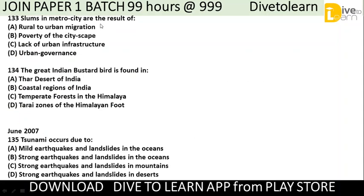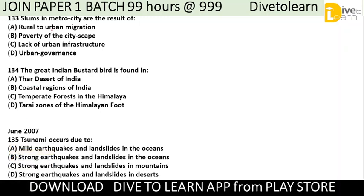Question 132: Slums in metro cities are the result of? The options are: rural to urban migration, poverty to city space, lack of urban infrastructure, or urban governance. The correct answer is rural to urban migration — when people move from villages to cities, they end up in slums.